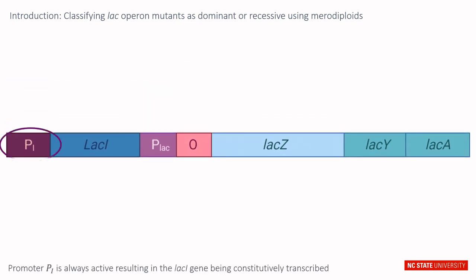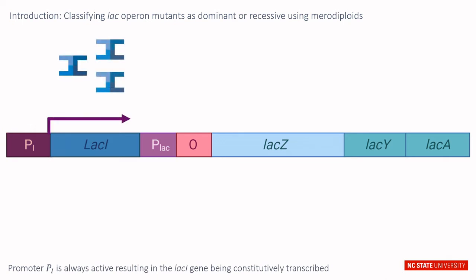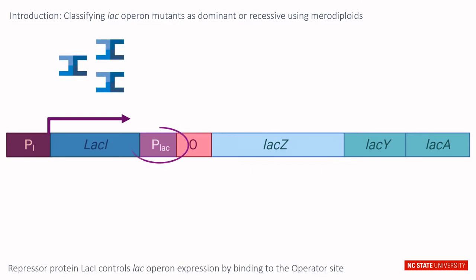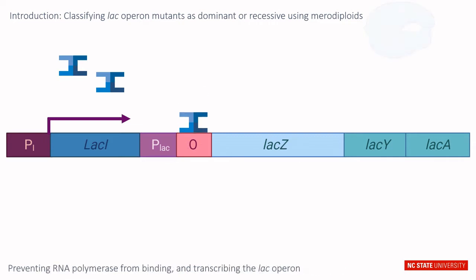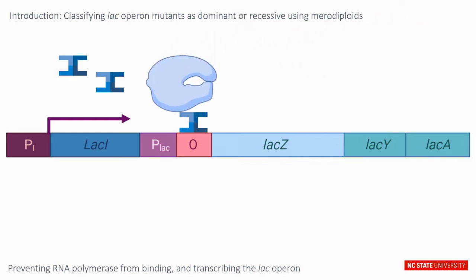The promoter for lac I is always active, resulting in the lac I gene being constitutively transcribed. Repressor protein lac I controls lac operon expression by binding to the operator site that overlaps the lac operon promoter. This prevents RNA polymerase from binding and transcribing the lac operon.